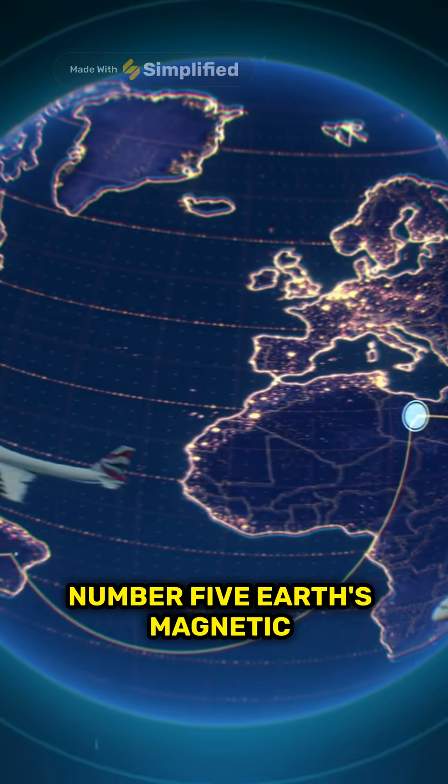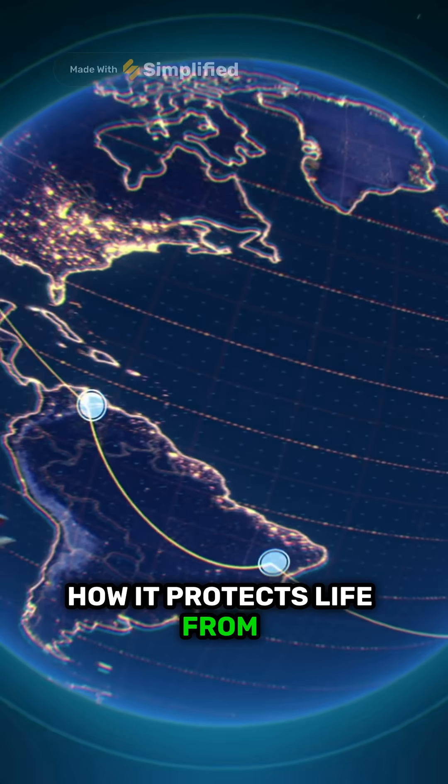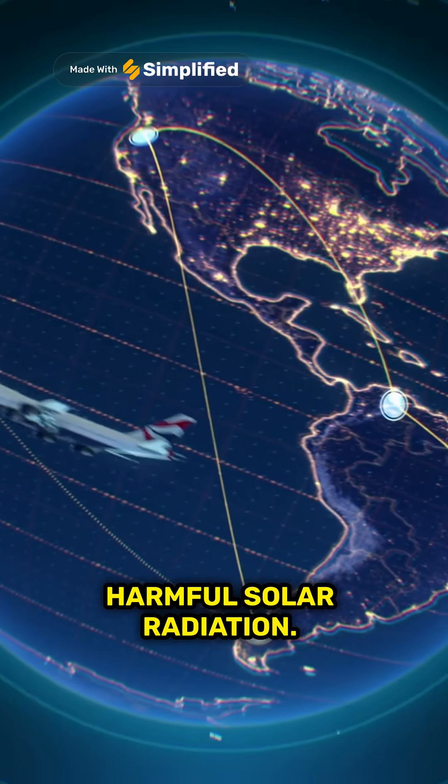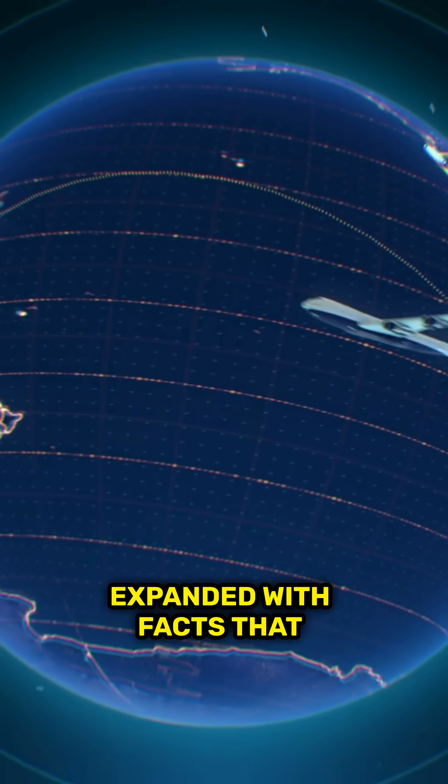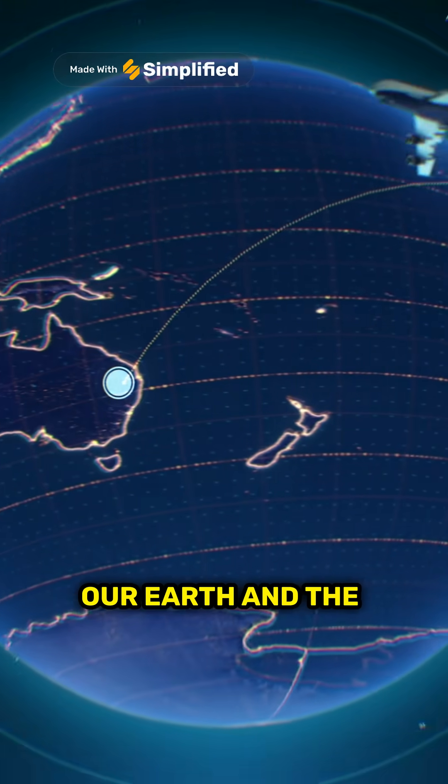Number 5: Earth's Magnetic Field. How it protects life from harmful solar radiation. Get ready to have your mind expanded with facts that challenge what you know about our Earth and the universe.